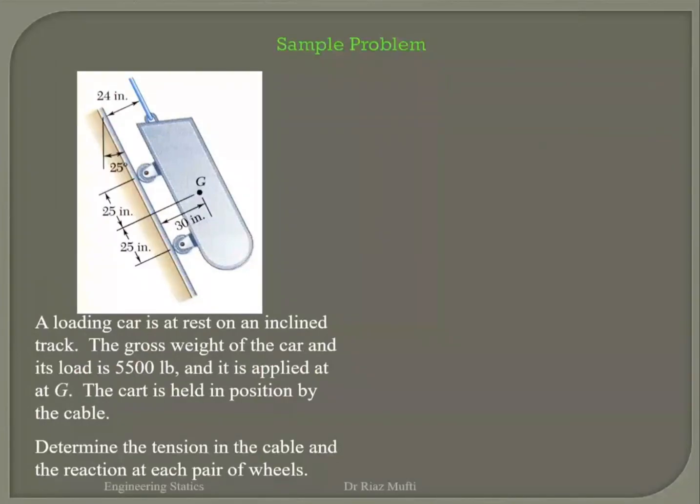You've got here a loaded car at rest on an inclined track. The gross weight of the car and its load is 5,500 pounds and it is applied at point G here.